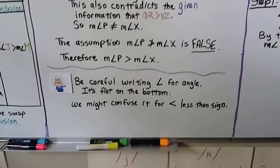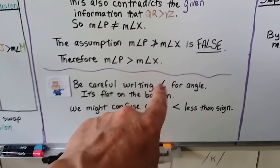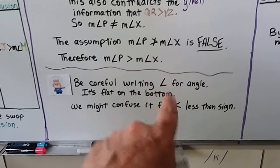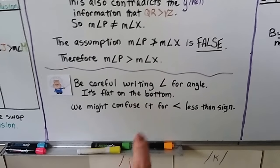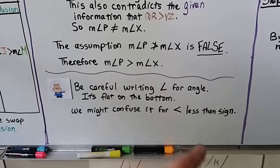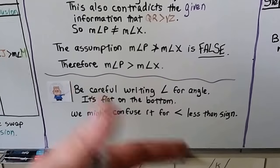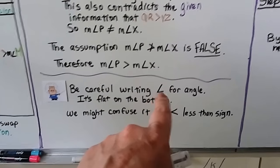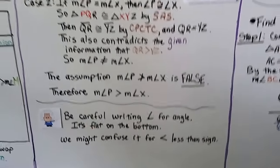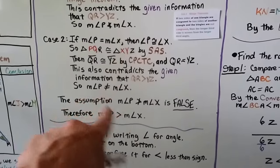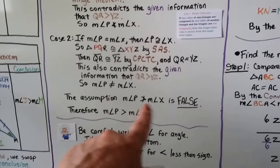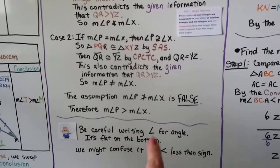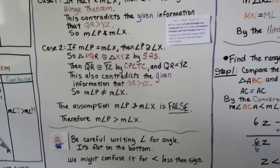Be careful when writing your angle symbol. Make sure you make it flat on the bottom, because you might confuse it for a less-than sign — and so might your teacher or whoever is grading your papers. When writing so many of them with less-than and angle signs together, you want to make sure you can tell them apart.